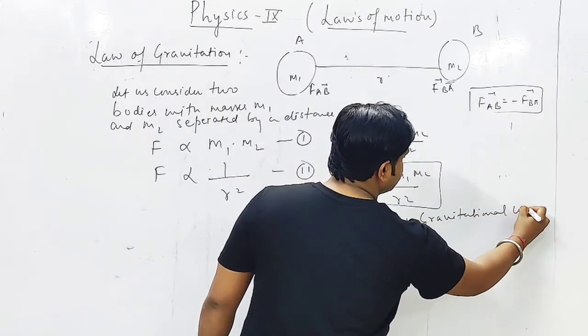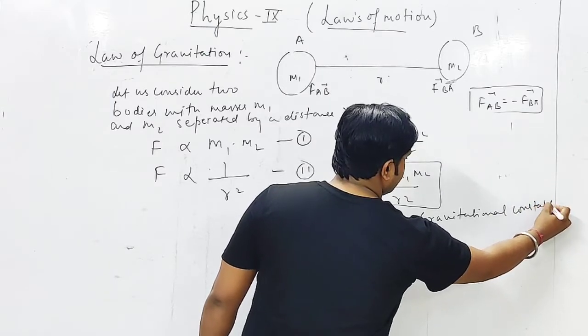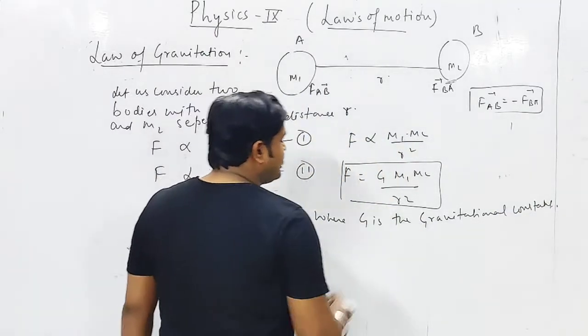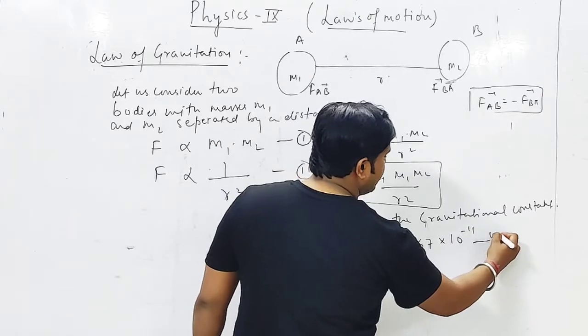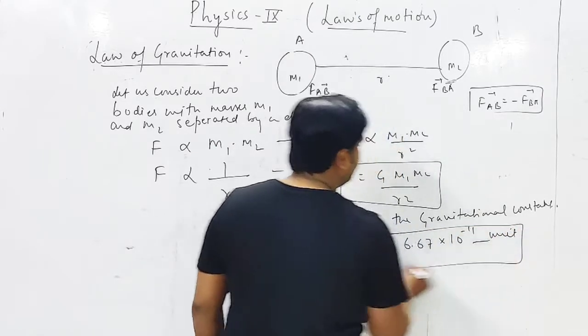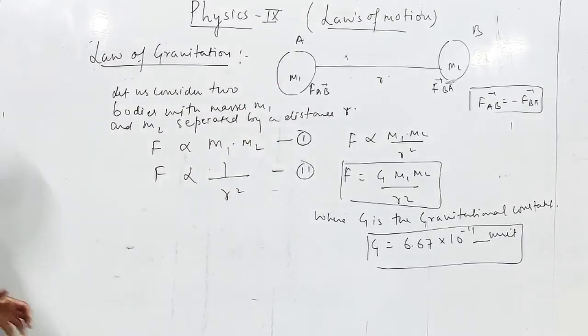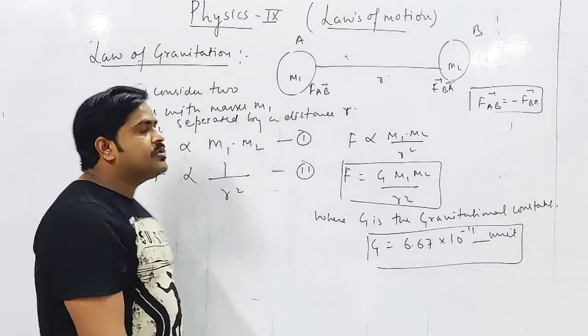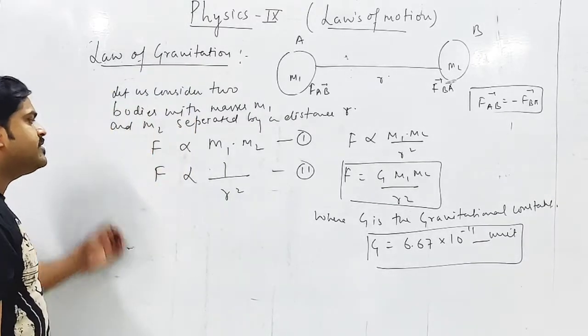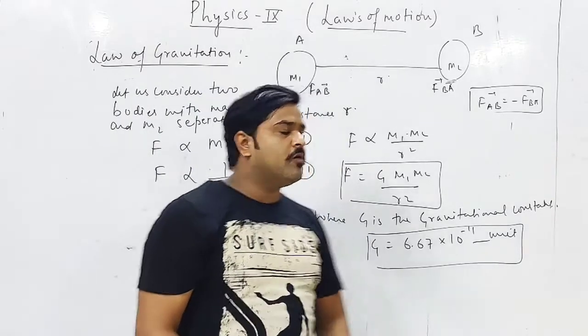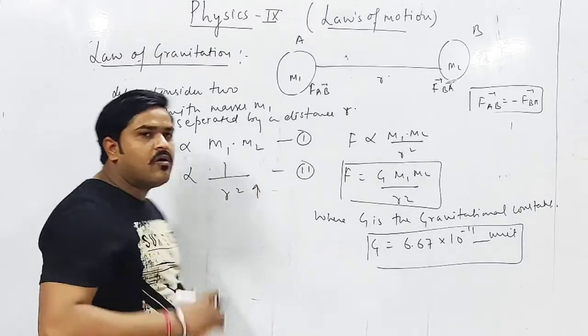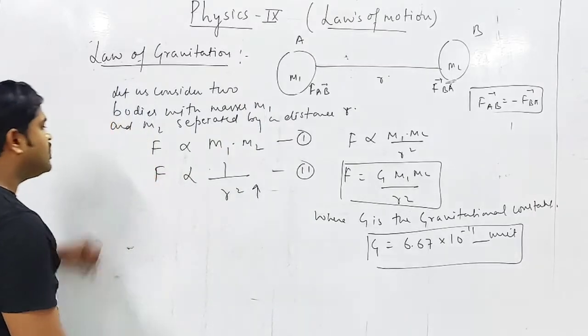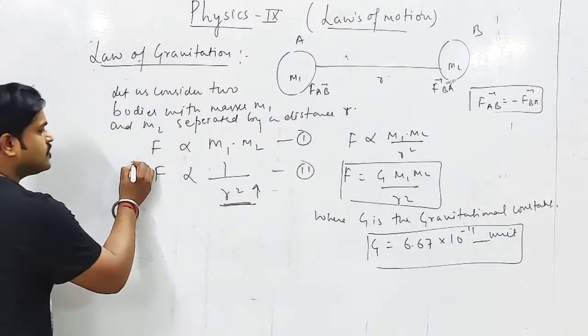This will be the final result where G is the gravitational constant. G ki value 6.67 into 10 to the power minus 11. Iski unit bhi aapko nikaalni padegi. So if someone asks what is law of gravitation, we will say it states that force is directly proportional to the product of the mass of the two bodies and force is inversely proportional to square of the distance between two bodies. Agar distance ka square hai, matlab jitna jyada distance badhega utni force of gravity kam hogi.